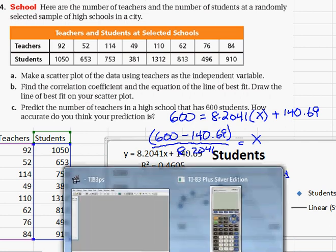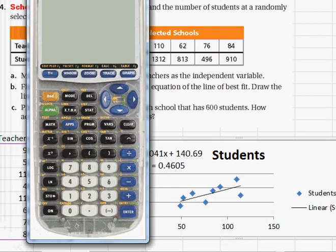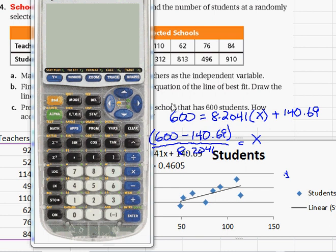Let's go ahead and do that with the graphing calculator. So 600 minus 140.69 divided by 8.2041. Let me write that down: 600 minus 140.69 divided by 8.2041.